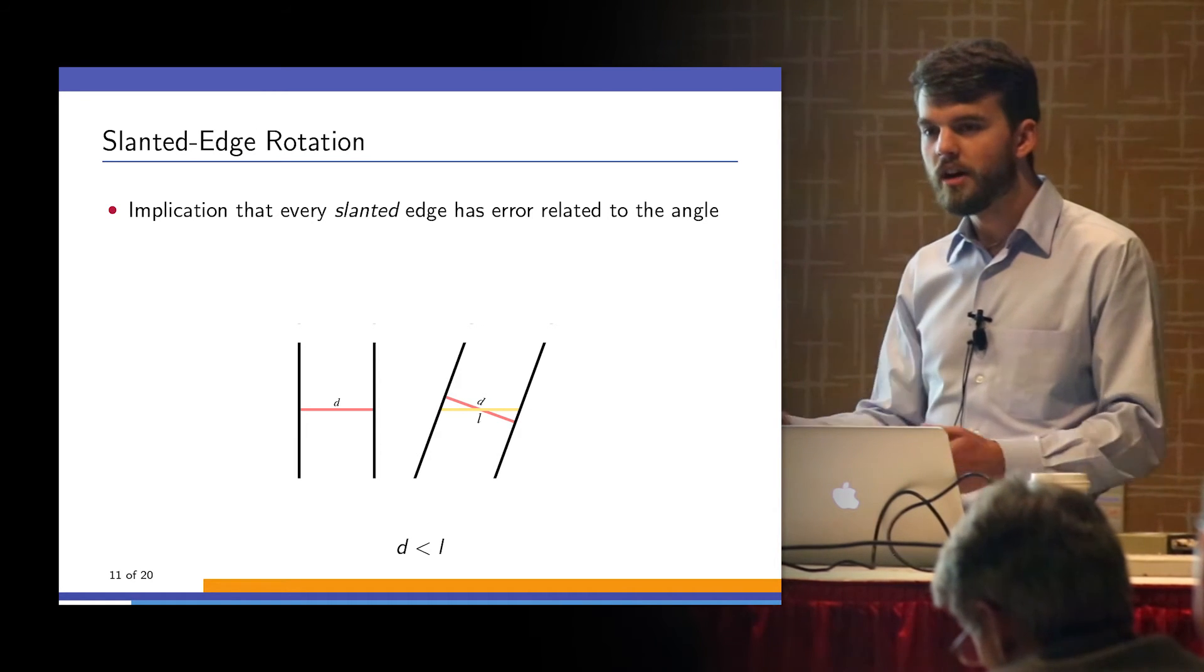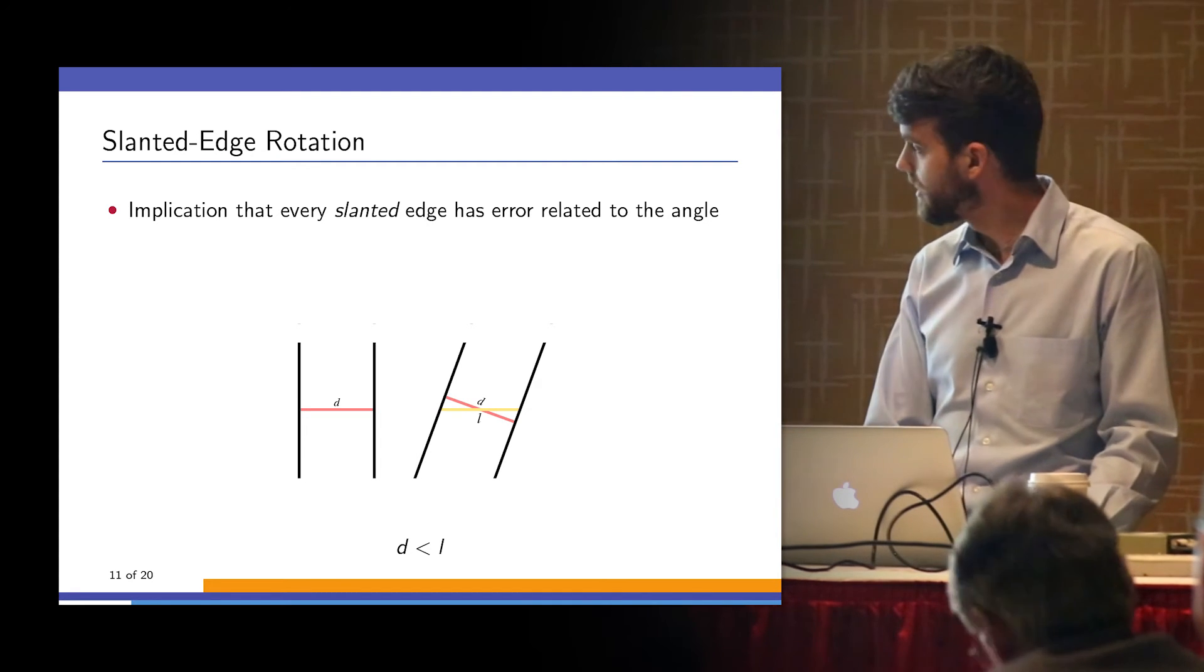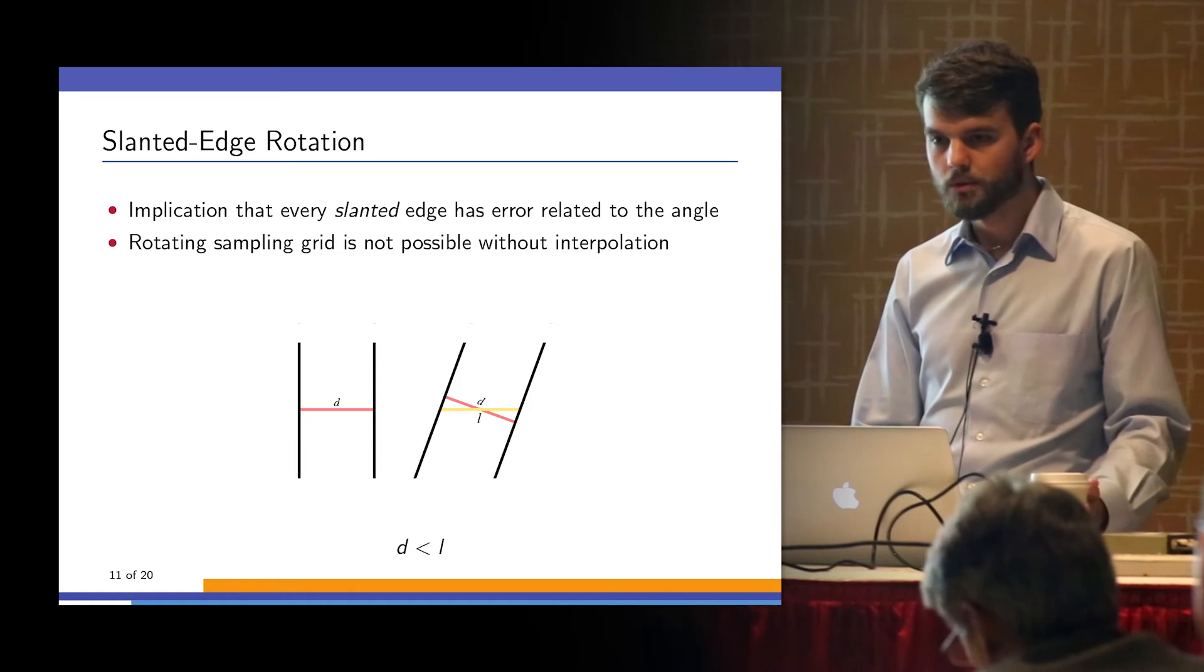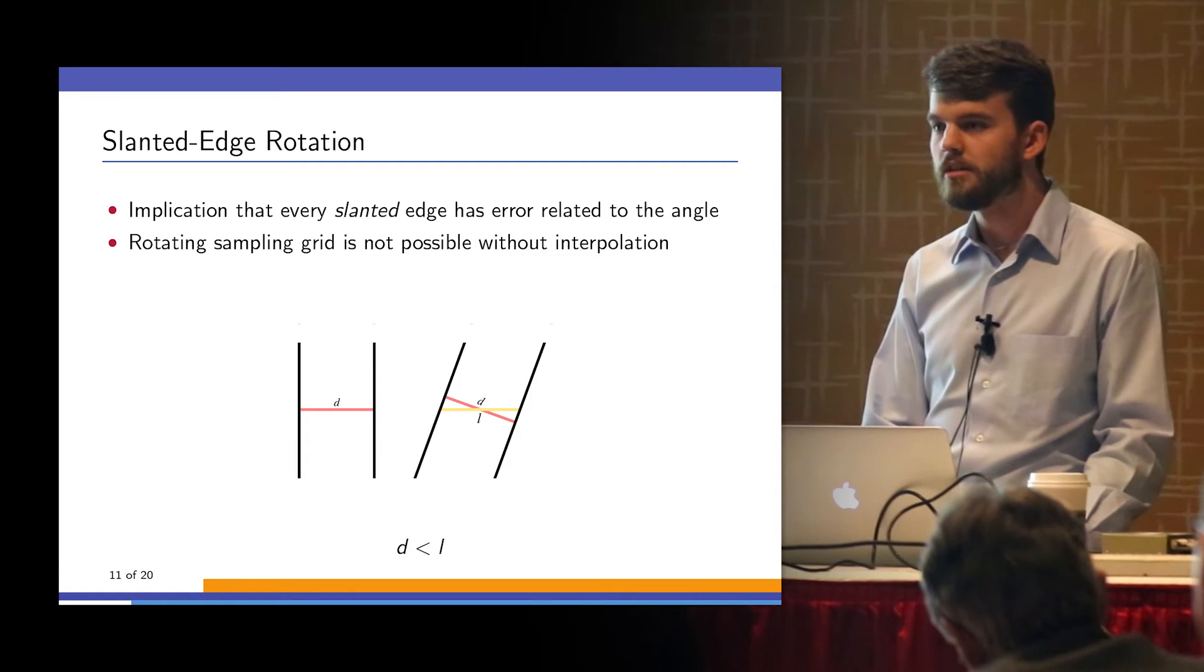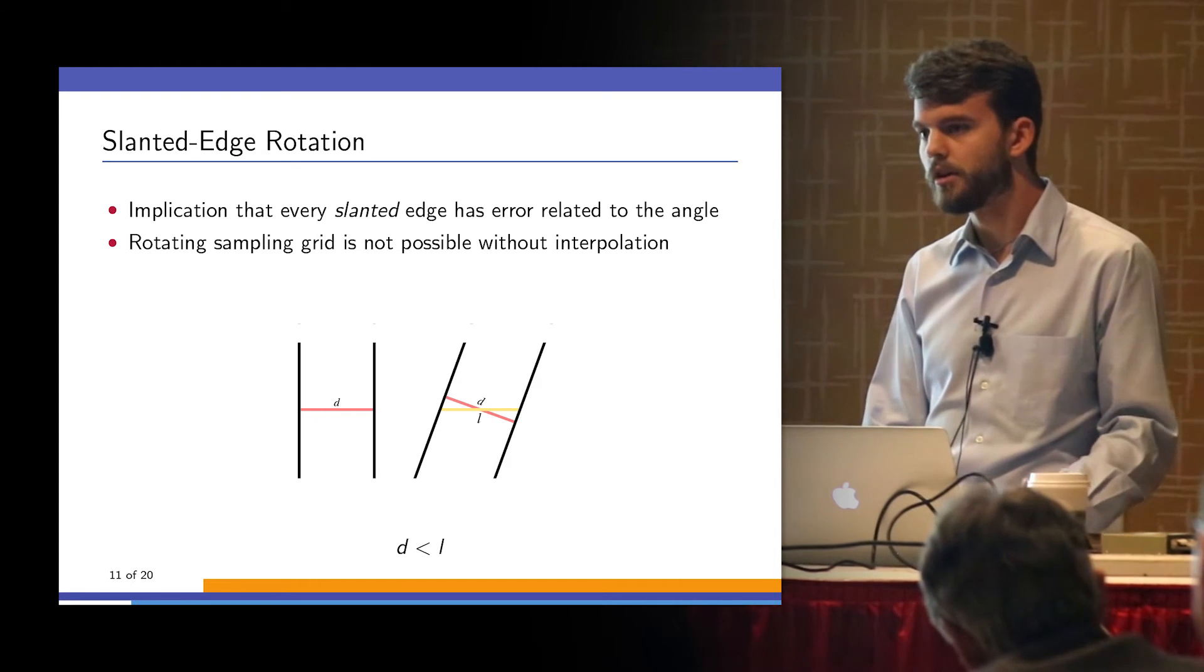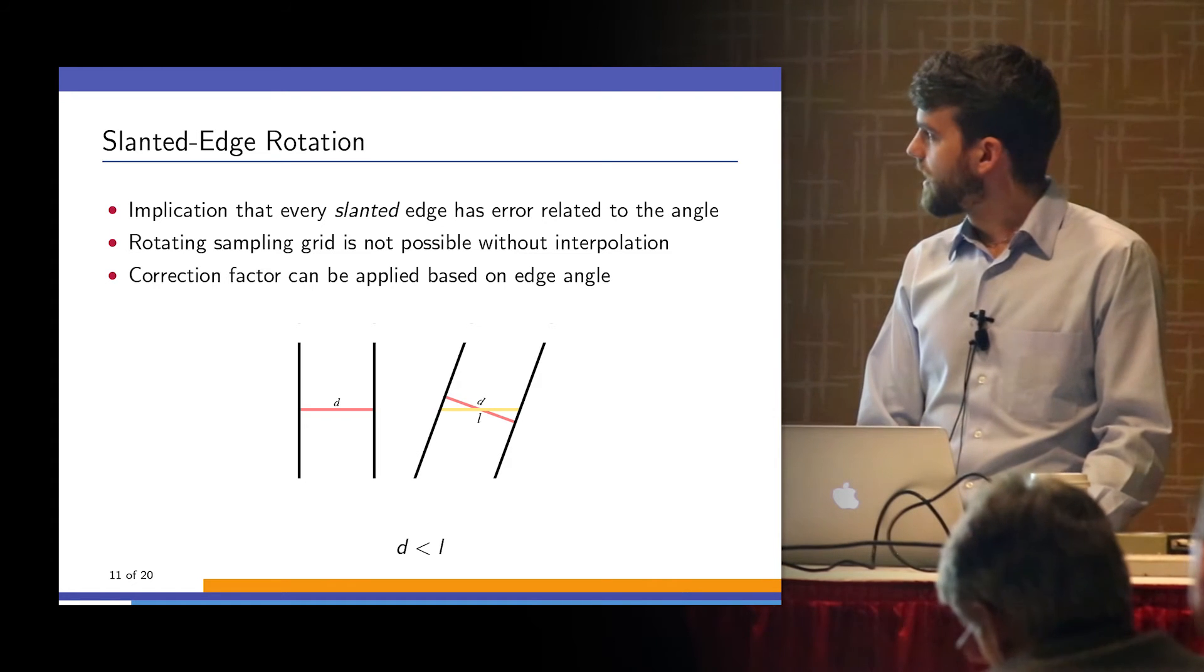We can't rotate the sampling grid because that would ruin our process. And if we try to rotate the image after it's been acquired, we have to interpolate and our results are no longer completely accurate. But we can apply a correction factor.